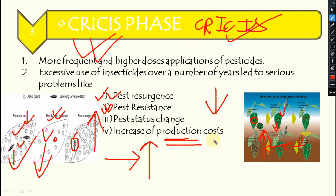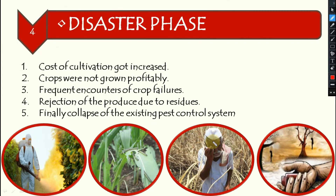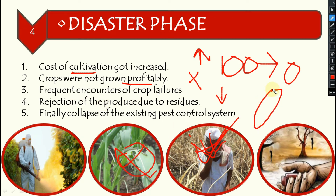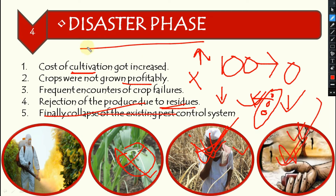The fourth phase is the disaster phase. The cost of cultivation and input costs increased while crops were no longer profitable. Frequent crop failures occurred — input costs were going up but output was falling drastically, leading to farmer financial failure. Produce had poor market value due to pesticide residues and insect infestation inside the crop. Finally, the existing pest control system collapsed completely, leading to crop failure and even farmer suicide, with total destruction of the ecosystem.